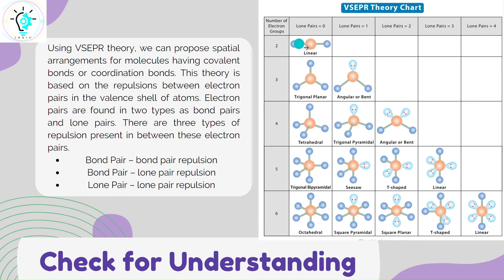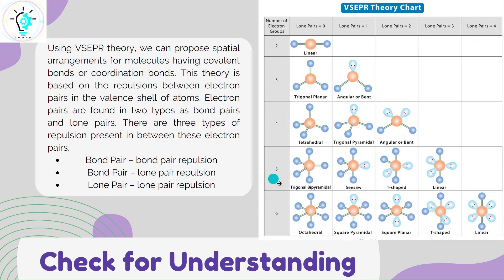So, if there are two electron groups, it is linear. If there are three electron groups and no lone pair is present, it is trigonal planar. If there is one lone pair, it is angular or bent. If the number of electron groups is four and no lone pair is present, it is tetrahedral. If one lone pair is present, it is trigonal pyramidal, and if two lone pairs are present, it is bent. If the number of electron groups increases to five, then without any lone pair, we get trigonal bipyramidal.